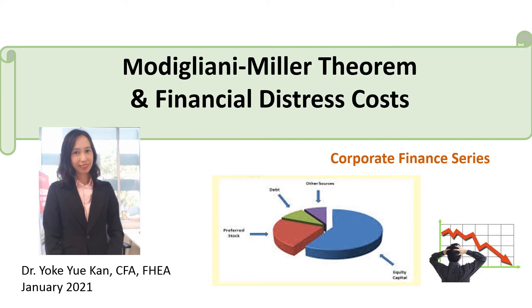In my third video, we learned that in a world with corporate taxes, the value of the firm increases with leverage, implying that the firm should take on as much debt as possible. But is this the whole story? Should financial managers really set their firm's debt-to-equity ratios as high as possible, near 100%? If so, why do real-world companies have rather modest levels of debt?